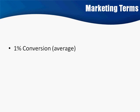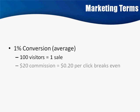What that means is that out of 100 visitors, you make one sale. I know these numbers, if you're new to this, are going to scare you, but this is the real world. Out of 100 people that come to the site, one person buys that product. If there is a $20 commission to get that one sale, $0.20 per click breaks even.